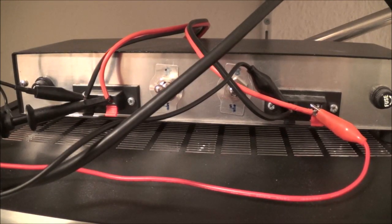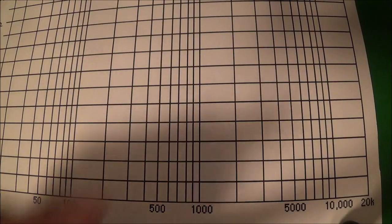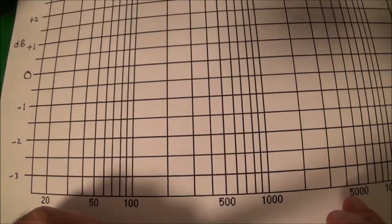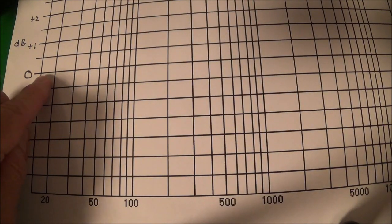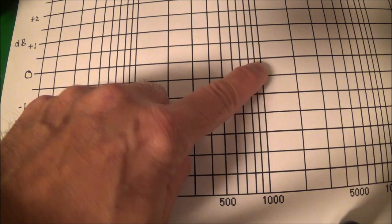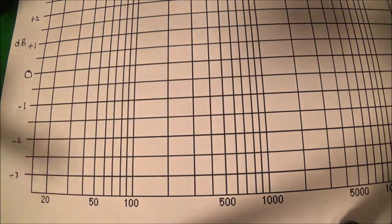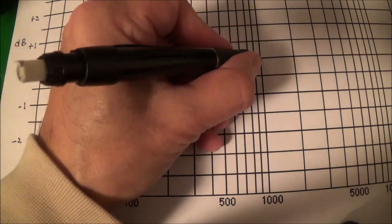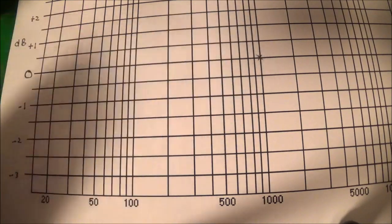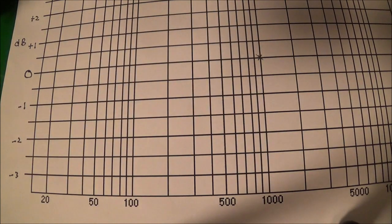Here we can see the graph paper again. This is a thousand Hertz, and we come over to the left we can see here zero dB. That's going to be the reference, and I'm going to make the first X right there. So that's going to be at one watt. Now I'll go ahead and turn the volume control all the way up and then slowly bring up the audio generator until I'm reading 2.82 volts on the AC voltmeter.